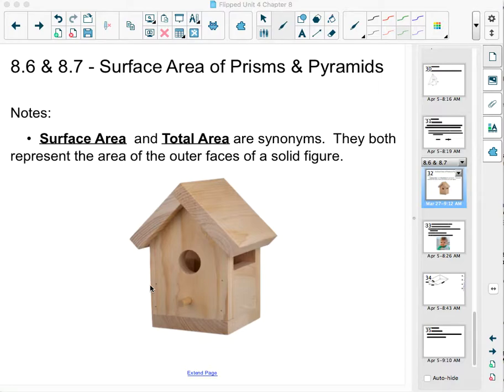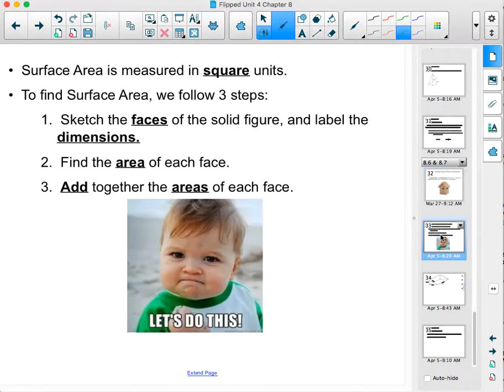So surface area is when we take all the shapes that make up a prism or a pyramid and we find all their areas and then we add those areas back together. Just a review, surface area is area, so it's measured in square units. We're not filling the birdhouse with anything, we're just painting the outside of it.